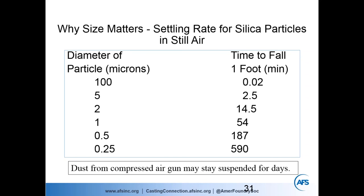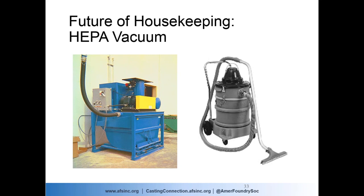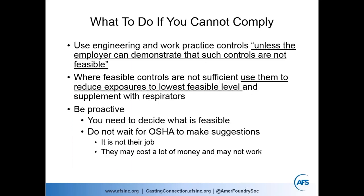Fine dust doesn't follow the laws of gravity. Large particles around 100 microns fall fairly quickly, but at 1 micron it takes 54 minutes to fall just one foot — and that's in still air. Fine respirable dust can remain suspended for days, following air currents and settling on any surface. For that reason, compressed air for cleaning is incompatible with dust control: it moves the big particles but suspends the fine dust, which then wanders all over the foundry.